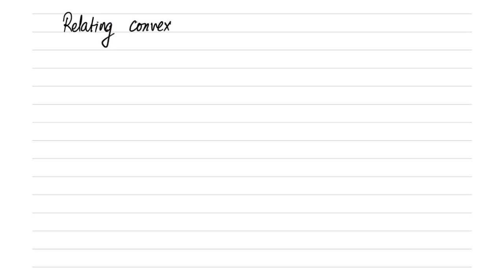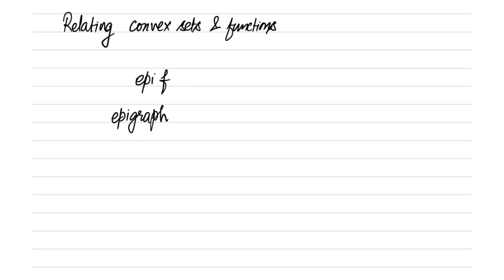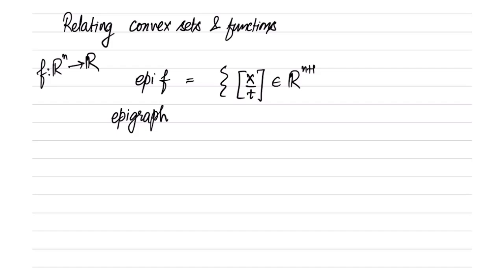There are very fundamental relations between convex sets and convex functions. To relate the two, we define the epigraph. The epigraph of f is defined as the set of all (x, t) belonging to R^(n+1), where f is a function from R^n to R, such that f(x) ≤ t for all x in the domain of f.